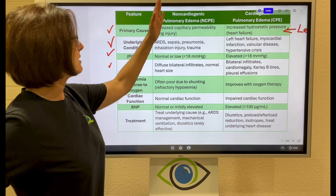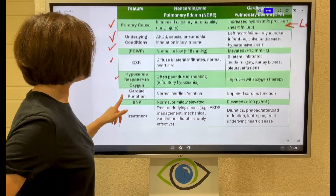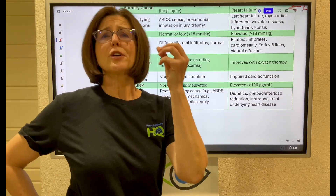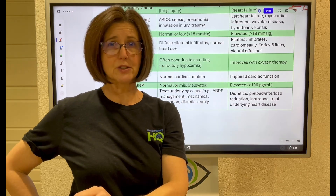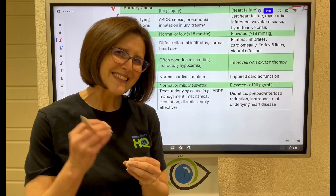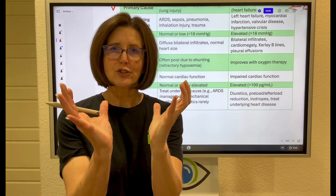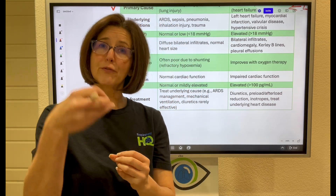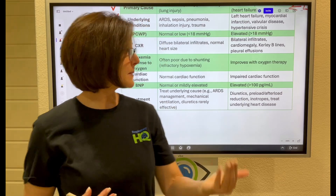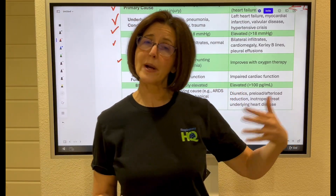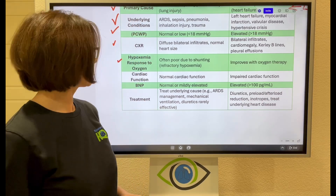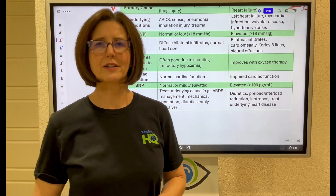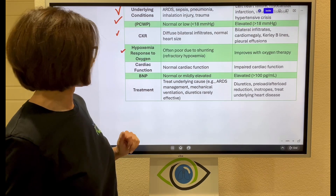Cardiac function is impaired with cardiogenic pulmonary edema, while it is normal with non-cardiogenic. For BNP — brain natriuretic peptide — this is a hormone produced by the left ventricle when it stretches too much. If you've got a stressed, stretched left ventricle from excessive fluid, BNP will be elevated. A level greater than 100 is your indicator that it is cardiogenic, as it will be essentially normal or just slightly elevated with non-cardiogenic pulmonary edema.